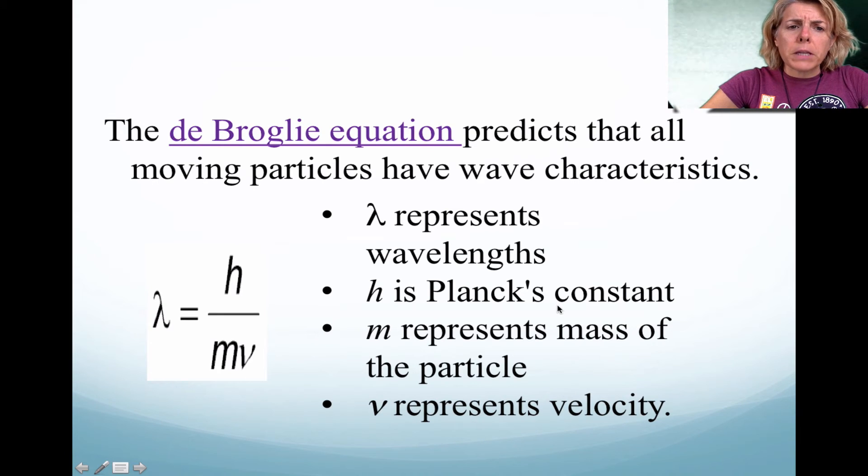So what does this mean? Well, he actually determined that moving particles could have wave properties, and he used the following formula. Lambda represented wavelength. Once again, he brought in Planck's constant, but he also incorporated mass, so mass of the particle. He also added velocity to the formula. So he determined that electrons could have wavelength behavior.